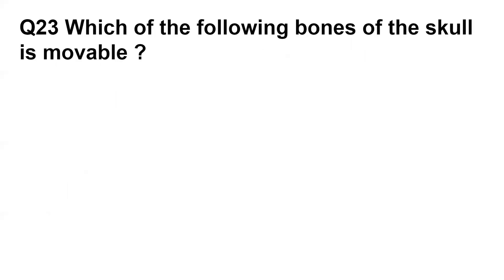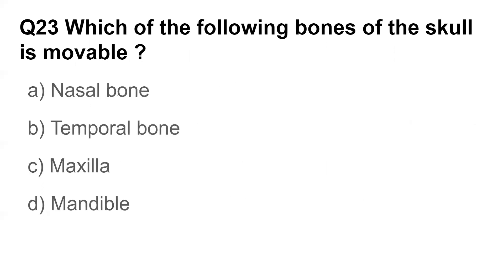Question number twenty-three: Which of the following bones of the skull is movable? Options are nasal bone, temporal bone, maxilla, and mandible. The answer is mandible. The mandible or jaw bone is the movable bone of the skull.